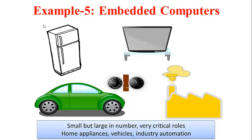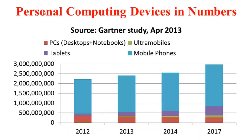So that is with respect to computing devices in various contexts. What about the number of personal computing devices? This graph shows the number of personal computing devices of various kinds which enter the market per year, based on a study done by Gartner in April 2013. You can see that per year there are over 2 billion devices entering the market, getting close to 3 billion in 2017 as a prediction. The graph also shows that traditional personal computers — desktops and notebooks — are actually reducing in number while their place is being taken up by tablets.